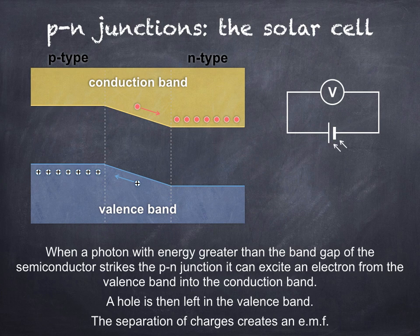If the light source was moved closer to the solar cell, then a greater number of photons would strike the solar cell per second, resulting in a greater separation of charges as more electron hole pairs are produced. A greater EMF would therefore be measured on the voltmeter.